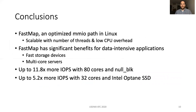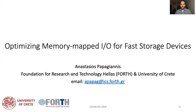To conclude, FastMap is an optimized memory-mapped I/O path in the Linux kernel. It is scalable with the number of threads and incurs lower CPU overhead. FastMap has significant benefits for data-intensive applications that use memory-mapped I/O to interact with fast storage devices on multi-core servers. FastMap provides up to 11.8 times more I/Os with 30 cores and a NULLBLK device. With an Intel Optane SSD, it achieves up to 5.2 times more I/Os with 32 cores. Thank you for your attention; I would be happy to answer your questions now, or you can reach me via email.